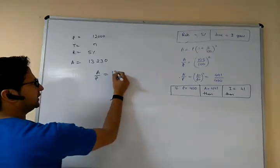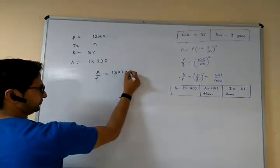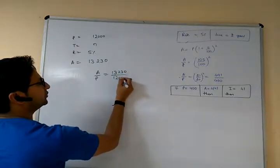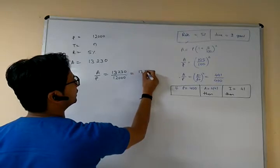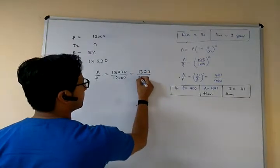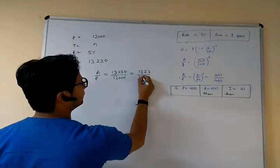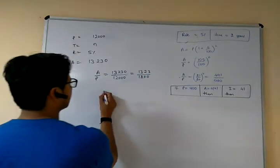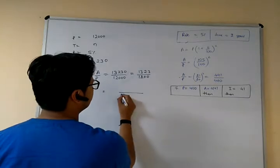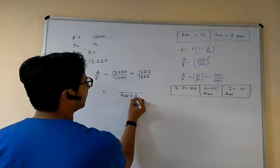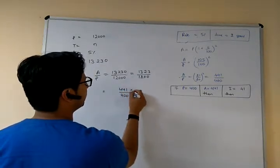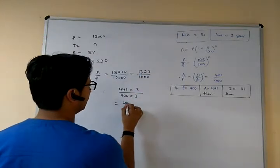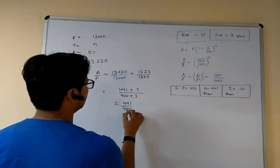13,230 upon 12,000 equals 441 upon 400. See: 400 into 3 is 1200, 441 into 3 is 1323. So the ratio simplifies to 441 by 400.